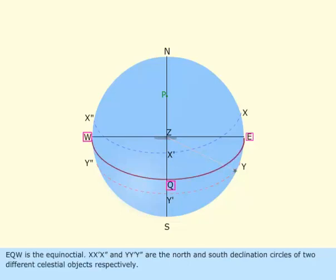EQW is the equinoctial. X, X' and Y, Y' are the north and south declination circles of two different celestial objects respectively.